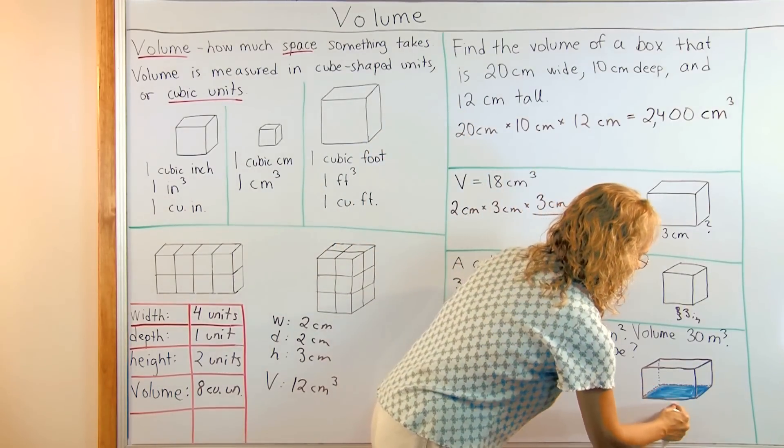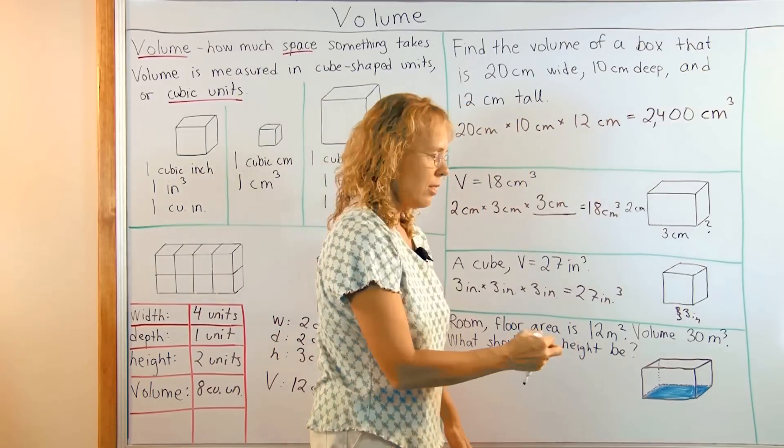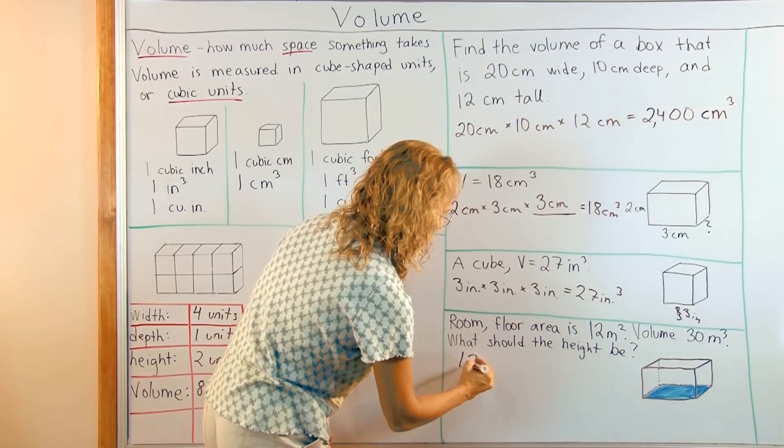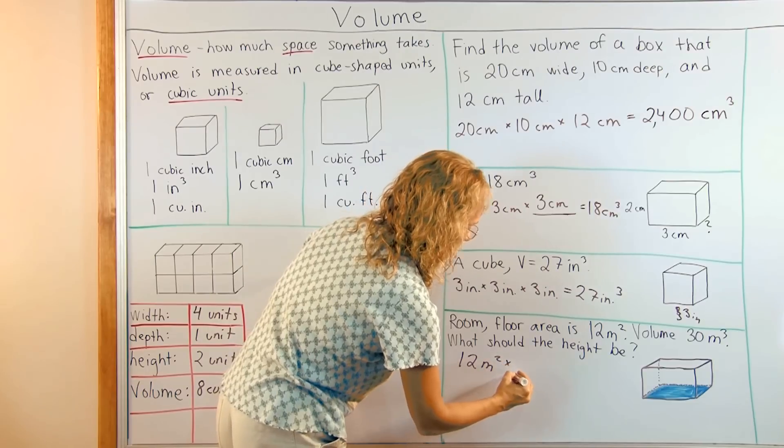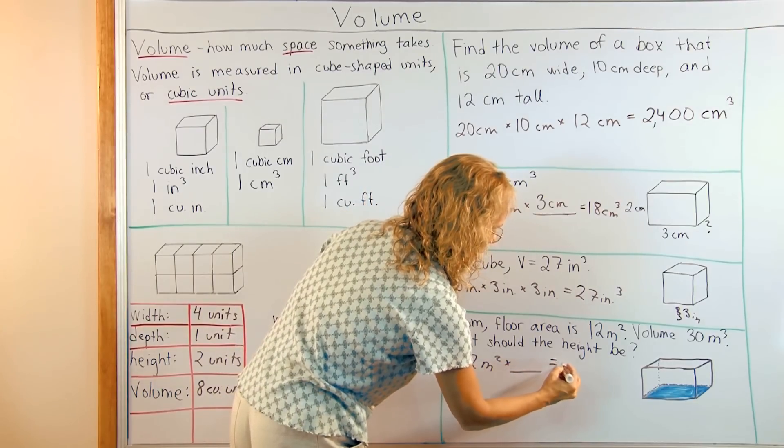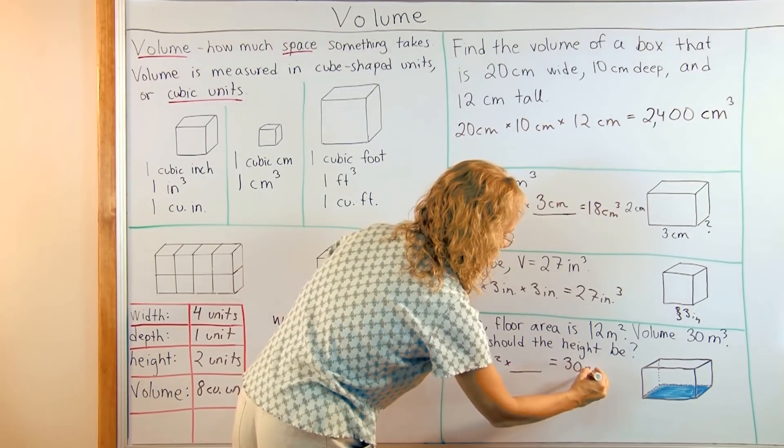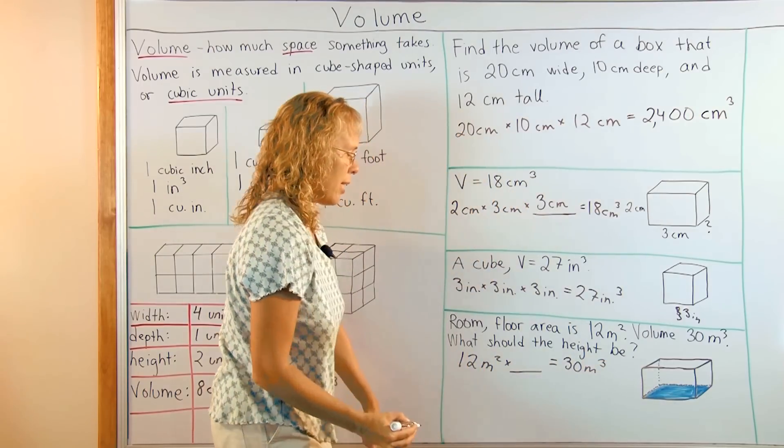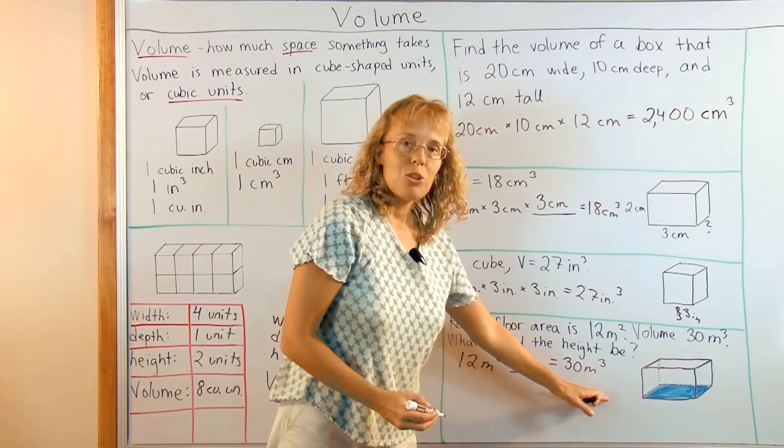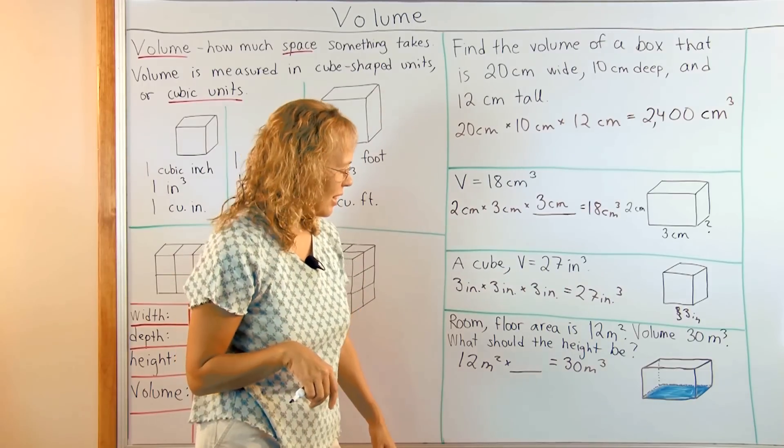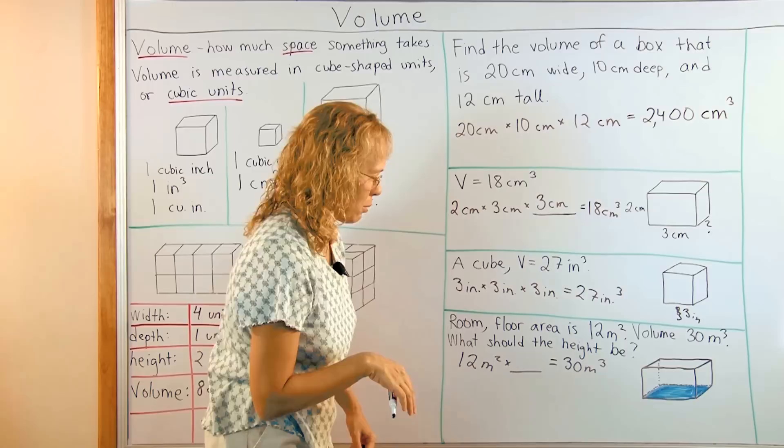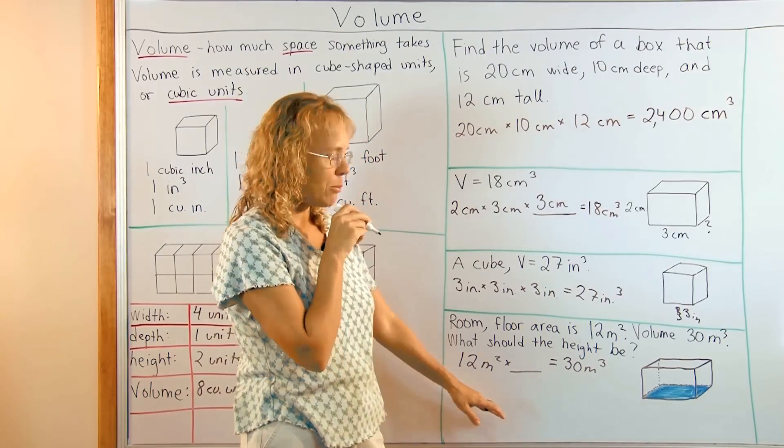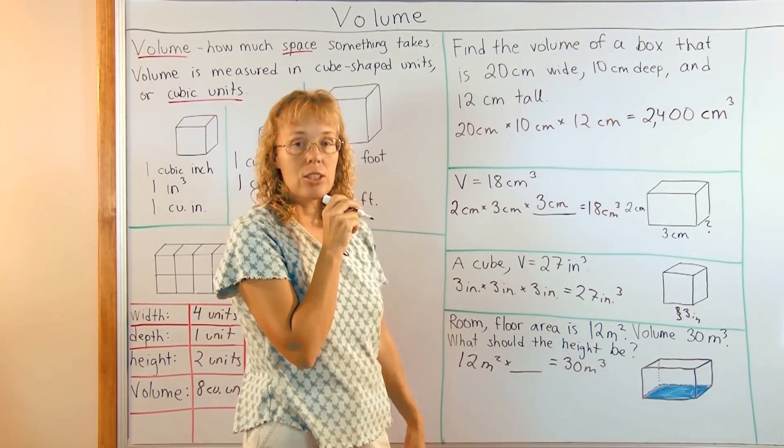We will get twelve square meters here, times something, which is the height equals thirty cubic meters, the volume. Okay? And to solve this, you can again use guess and check. Let me guess twelve times two. Twenty-four. That won't work. Twelve times three? Thirty-six. That's too much.